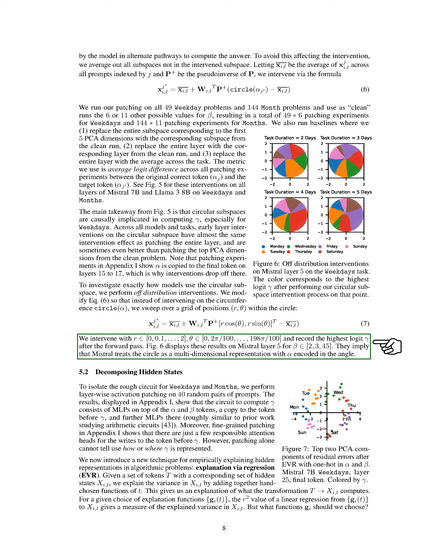In this section on decomposing hidden states, we isolate the underlying circuit for processing weekdays and months by applying layer-wise activation patching to 40 random pairs of prompts. The results reveal that the circuit for computing gamma involves multilayer perceptrons (MLPs) connected to the alpha and beta tokens, a copy of the token before gamma, and additional MLPs. Fine-grained patching indicates that only a few attention heads are responsible for writing to the token before gamma. However, patching alone does not reveal how or where gamma is represented.